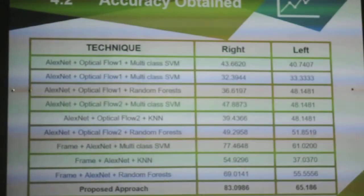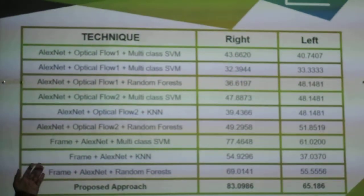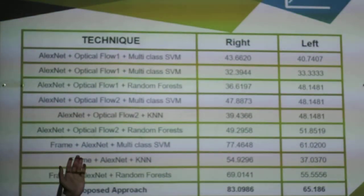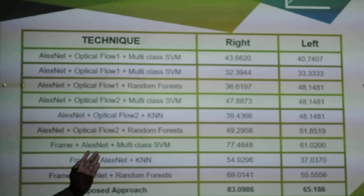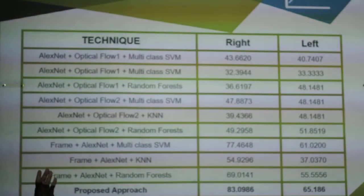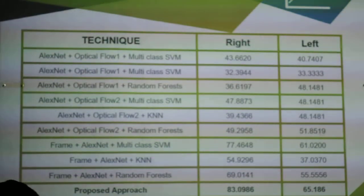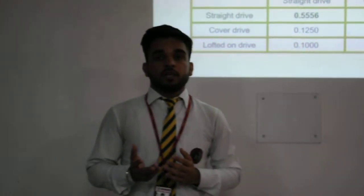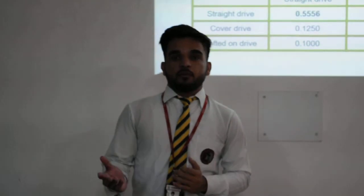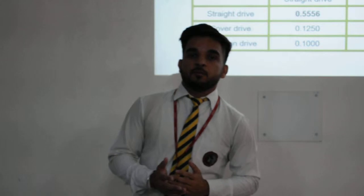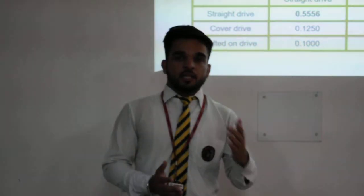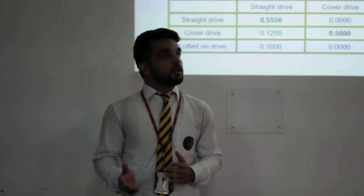These are the accuracy results obtained by the various techniques. The highest accuracy achieved by us was 43.66% using AlexNet and optical flow technique. The main challenge we faced was detecting the left-handed batsman and the right-handed batsman separately. So in the initial step, we applied a check on each frame to determine whether it is a left-handed or right-handed batsman.